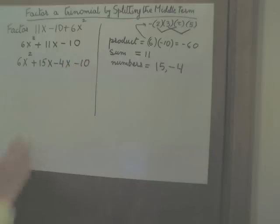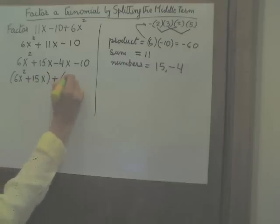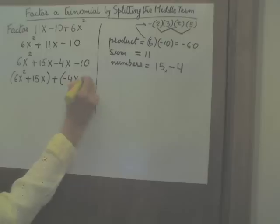In the next step, we are going to group together the first two terms, group together the last two terms. Within parenthesis, 6x squared plus 15x, that's my first group, and now my second group, plus negative 4x minus 10.